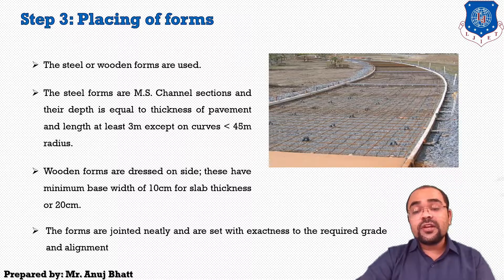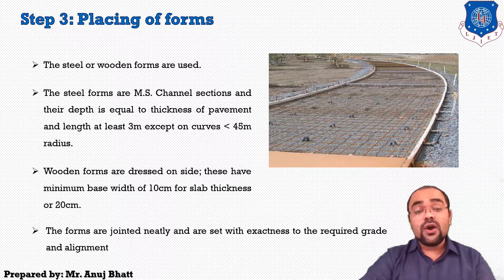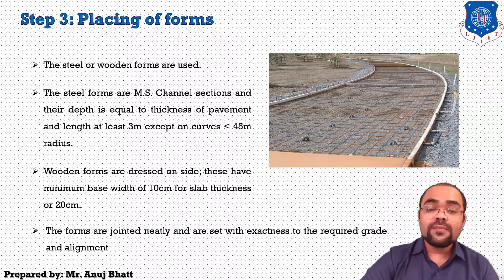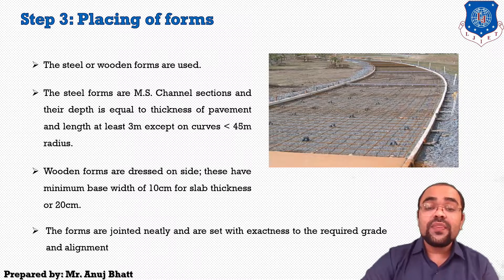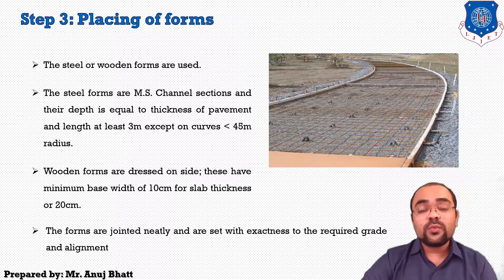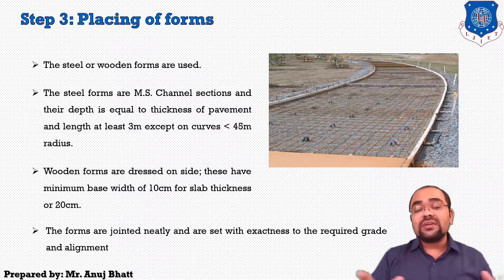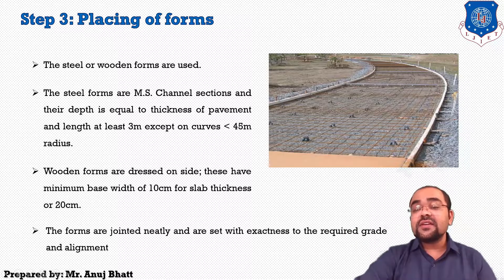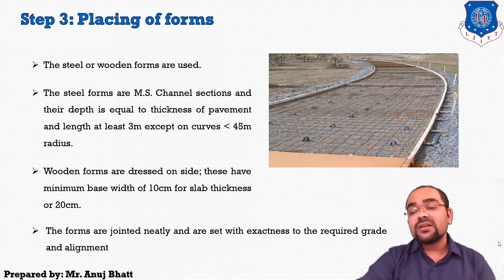Wooden forms are dressed on the sides and have a minimum base width of 10 cm for a slab thickness of 20 cm. The forms are joined neatly and set with exactness to the required grade and alignment; otherwise, the road width or dimensions would change. In this figure, we can see how formwork is applied for road construction.